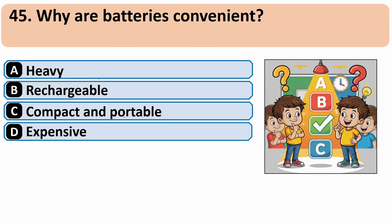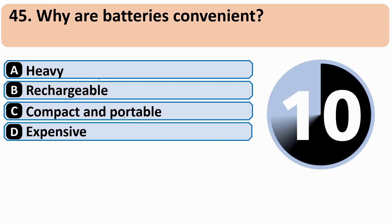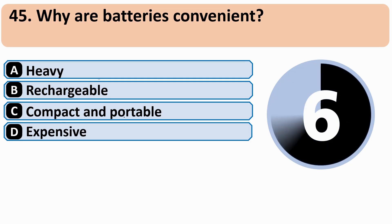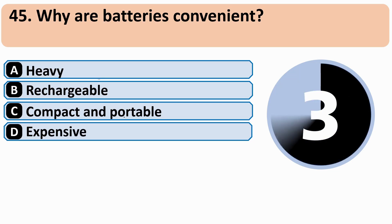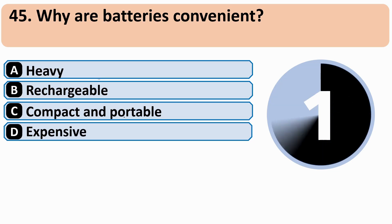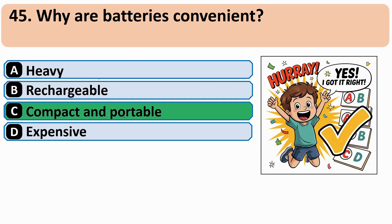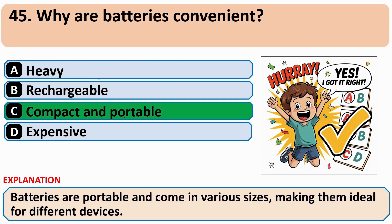Why are batteries convenient? The correct answer is C: Compact and portable.